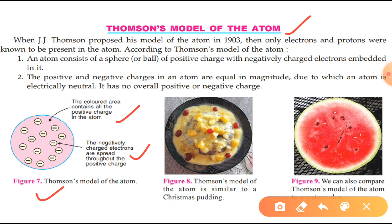Now we will understand why it is known as the plum pudding model. It is similar to a plum pudding in which raisins are just like the electrons. You can even compare it with a watermelon.